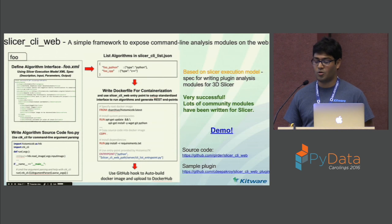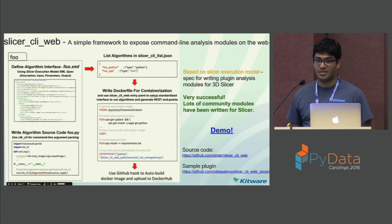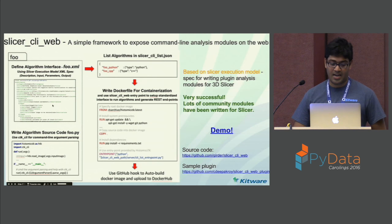What developers need to do is create a folder in their GitHub repository for each analysis module. They write an XML file which describes the inputs, the types of inputs, the parameters, any default values, and the output of the algorithm. Then they write code which adheres to this XML spec.